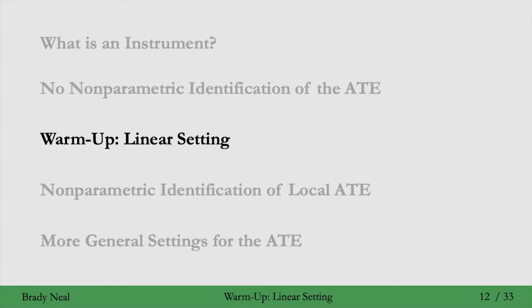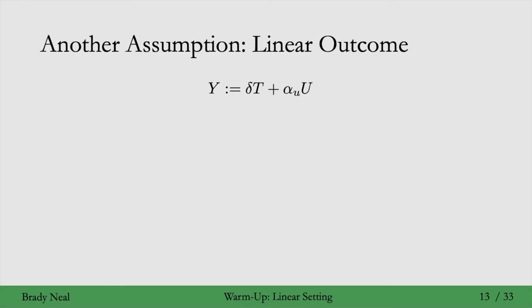While we can't get identification if we don't make any assumptions about the parametric form of the structural equations, we can fairly easily show that we can get identification if we have that the structural equation for the outcome y is linear. So we'll use that linear setting as a warm-up. If we make this assumption that the outcome is a linear function of t and the unobserved confounder u, then we can get identification. So this is a fourth assumption, and unlike the three assumptions before, this assumption is about parametric form.